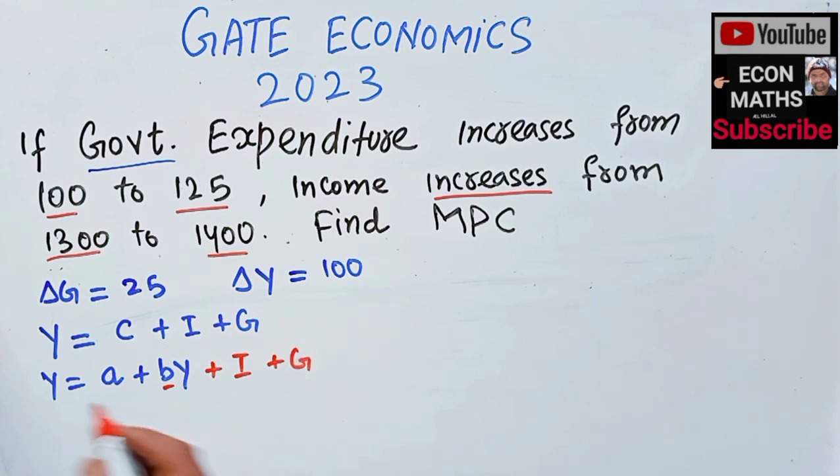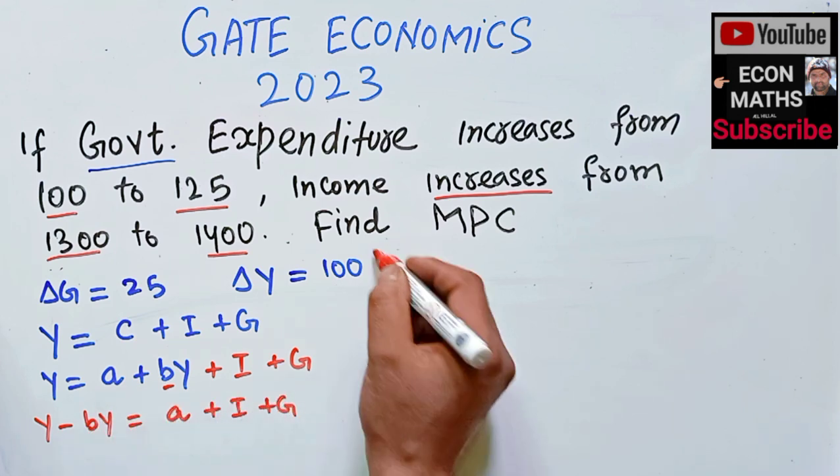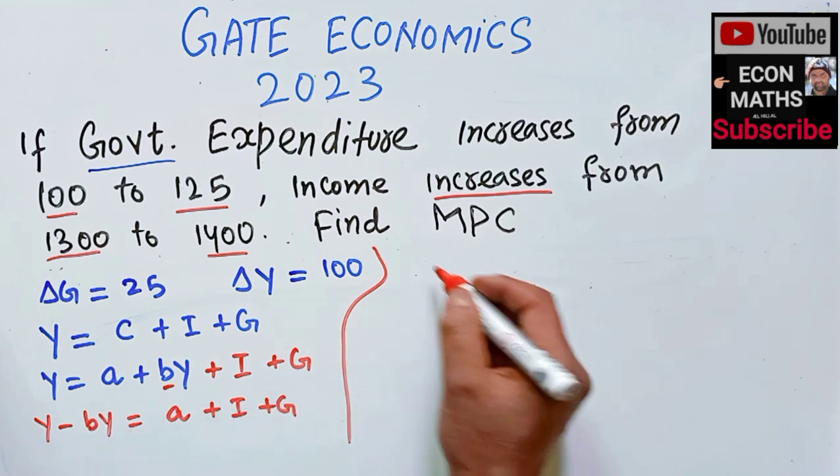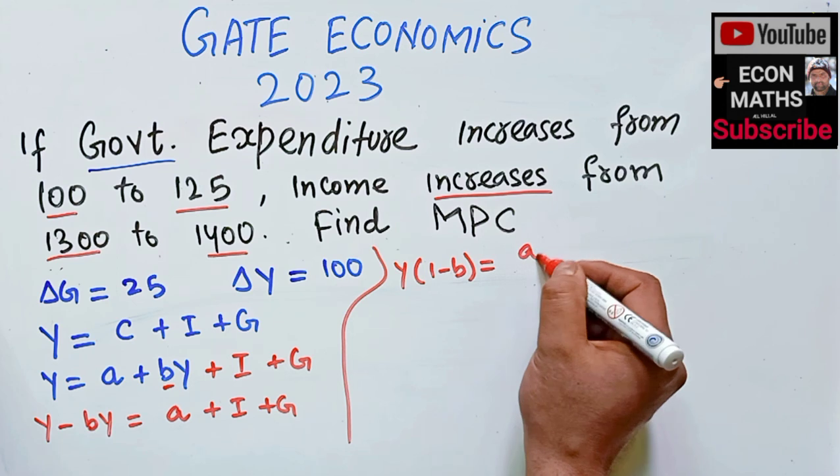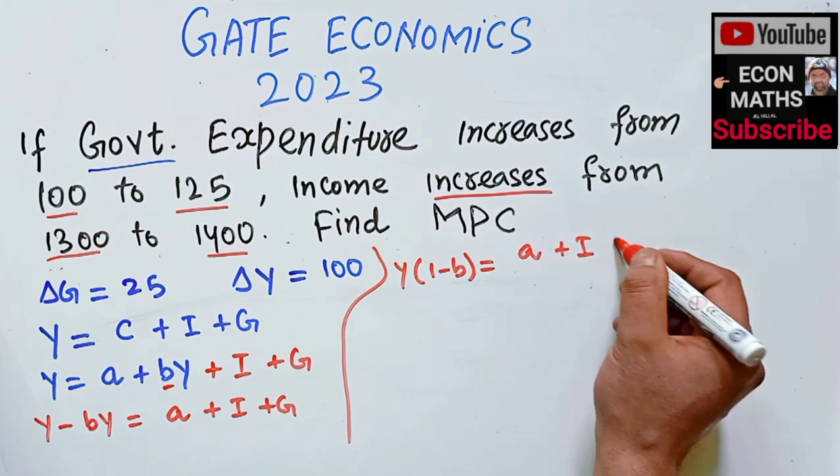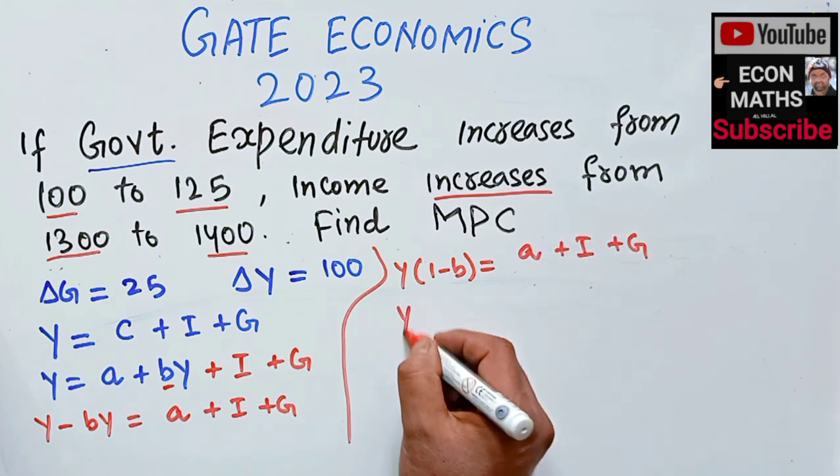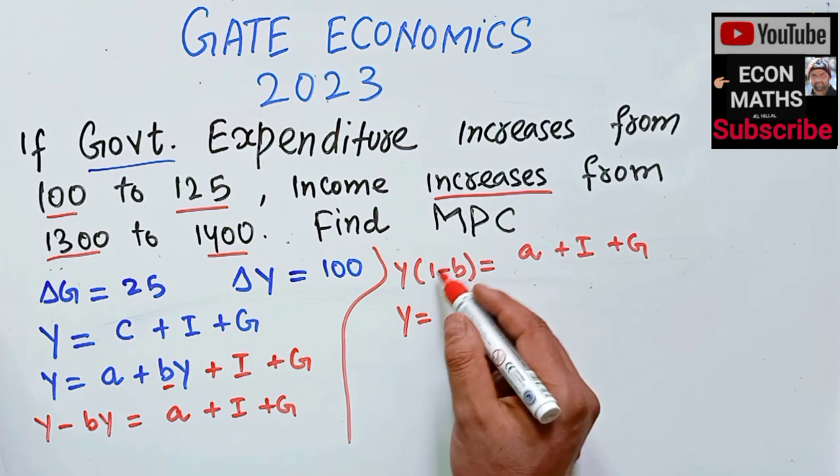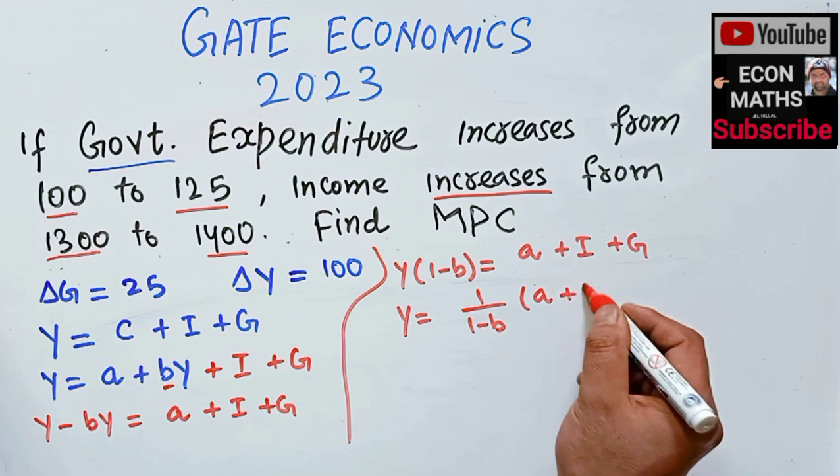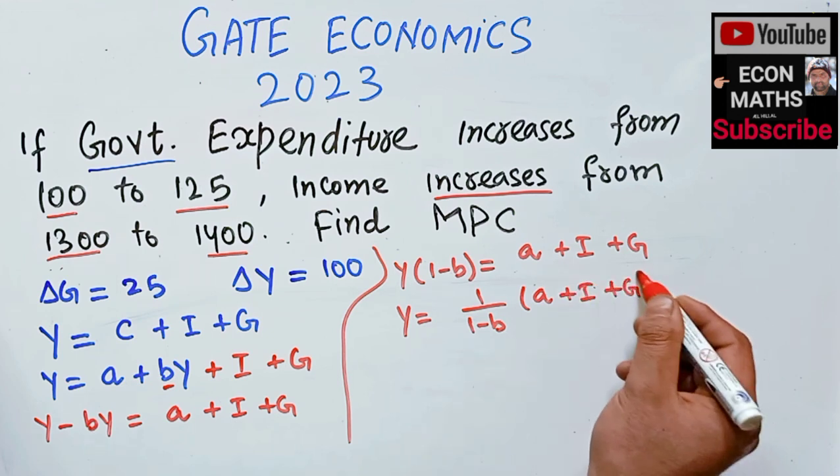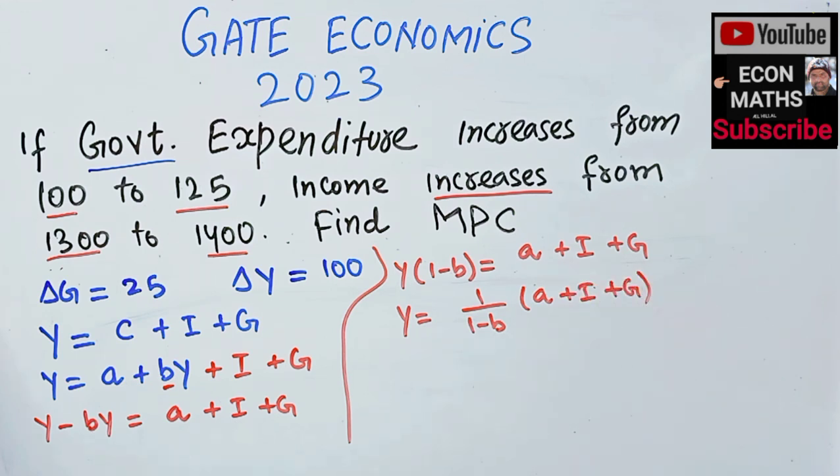Let us transpose: Y minus BY equals A plus I plus G. Taking Y common, we get Y times (1 minus B) equals A plus I plus G. Therefore, Y equals 1 over (1 minus B) times (A plus I plus G).